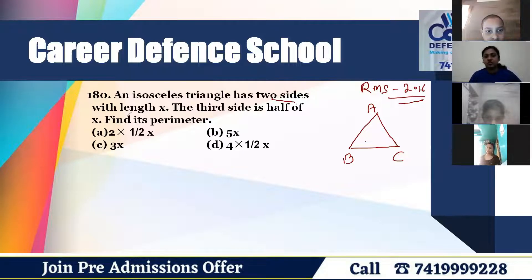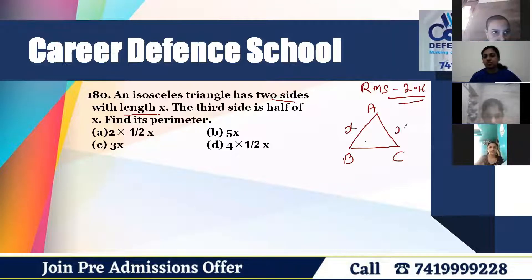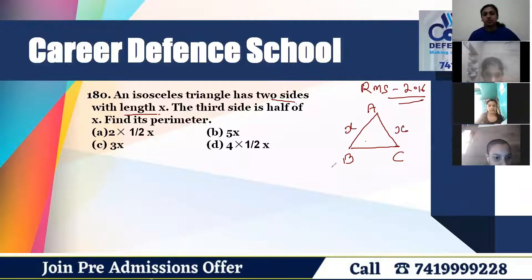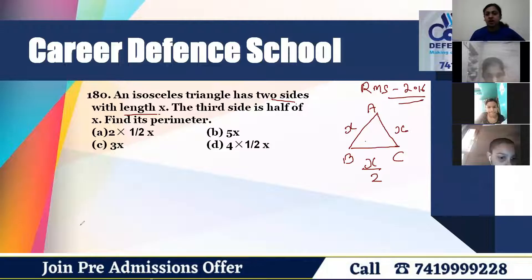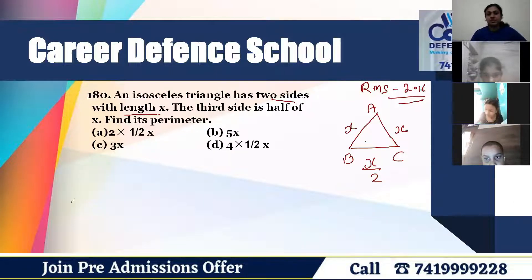Two sides with length X — both are X. And the third side is half of X. Half means X upon two.